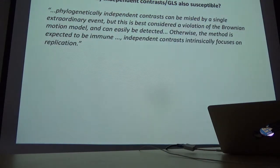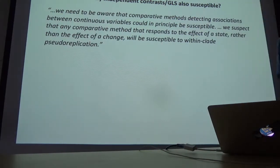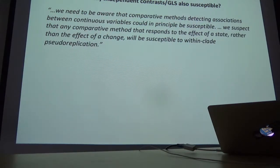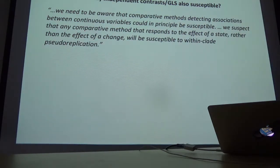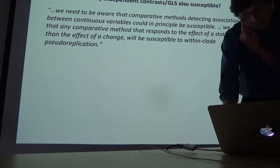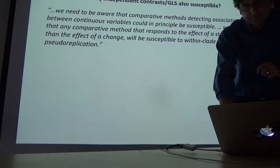There might be a kind of self-correcting procedure: ordinary diagnostics might be sufficiently incorporated into the method that it is unlikely to be misled. Especially with independent contrasts, the only way you can ever get a correlation is if the contrasts in one trait and in another trait point in the same direction over and over again — it counts the contrasts, not the non-shifts. However, as FitzJohn and Madison say, we need to be aware that comparative methods detecting associations between continuous variables could in principle be susceptible. Any comparative method that responds to the effect of a state rather than the effect of a change in state will be susceptible to within-clade pseudoreplication.